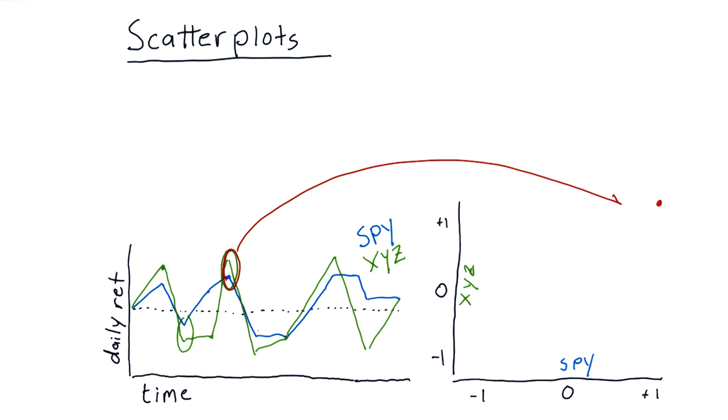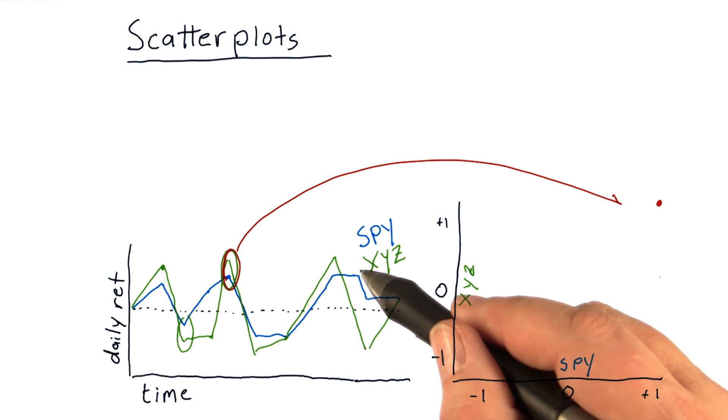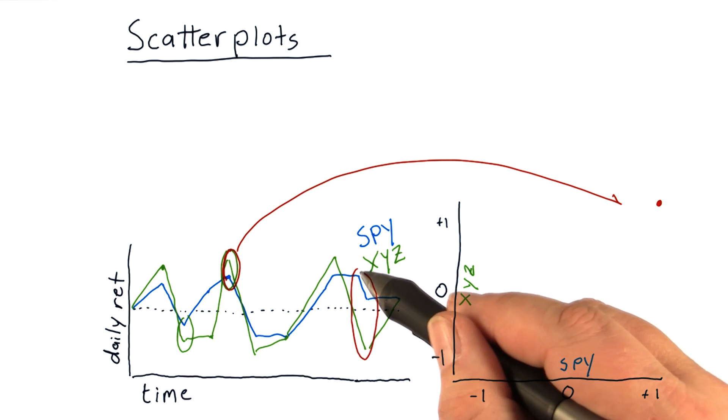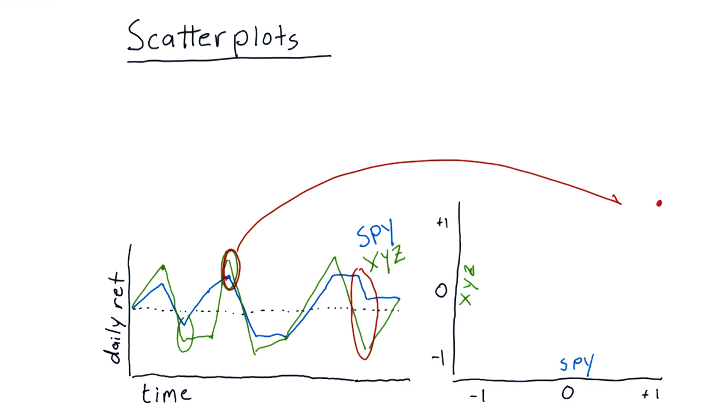We look at each day one by one individually and populate all of our dots based on what happened each day. Another interesting day is this one where SPY and XYZ were moving in different directions.